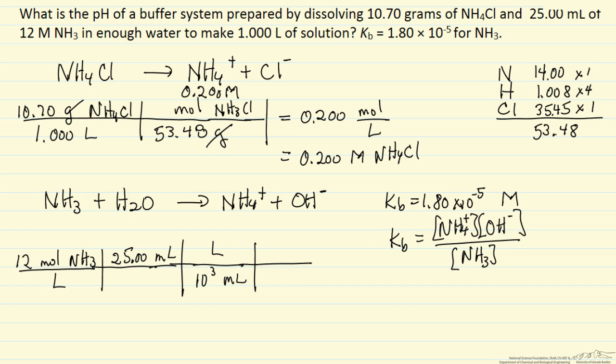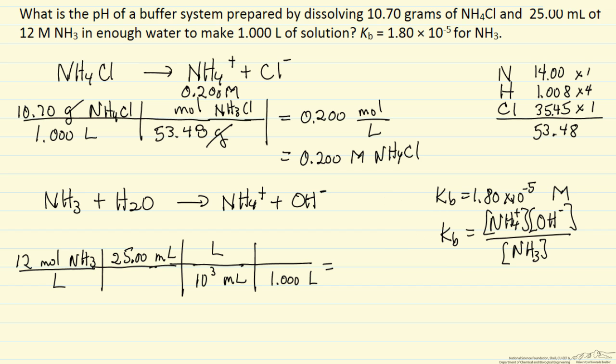And then we're going to take that number of moles of ammonia, and it's going to be in a final solution of 1 liter. If we multiply this out, we're going to have units of moles per liter, and that's what we want for our calculation. And this is going to be 0.30 molar of ammonia.